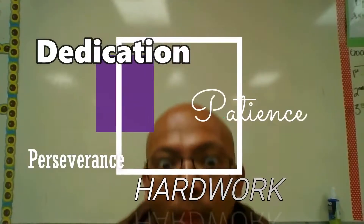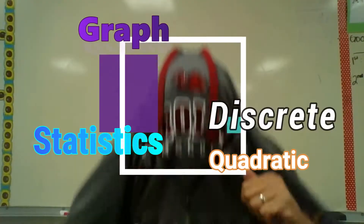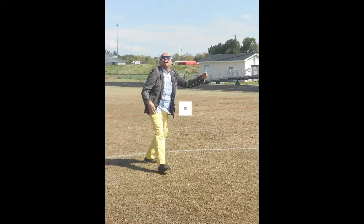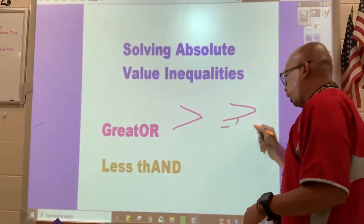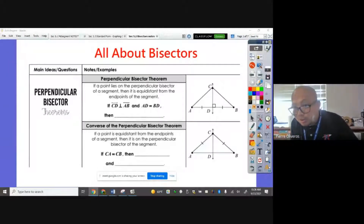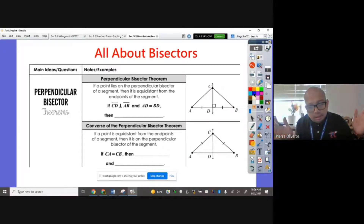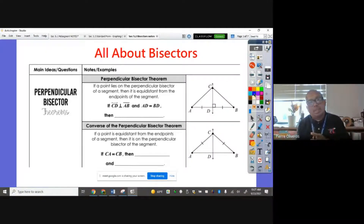Yo yo yo, this is Mr. O. And today we're going to learn all about bisectors. A bisector could be a segment, line, or ray that bisects a segment or an angle. Today we're going to learn about the Perpendicular Bisector Theorem and the Angle Bisector Theorem.